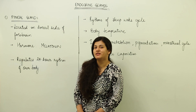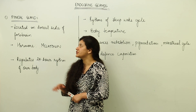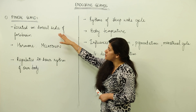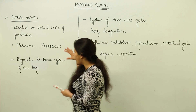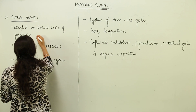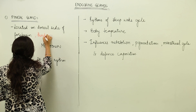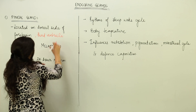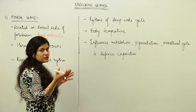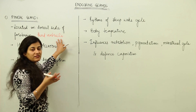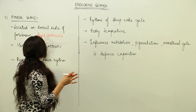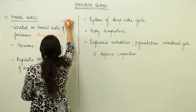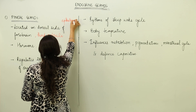Now let us consider another endocrine gland situated in our brain — the pineal gland. It is present on the dorsal side of the forebrain, behind the third ventricle. Along with the pituitary and hypothalamus, it is located in the brain, specifically in the region of the epithalamus.